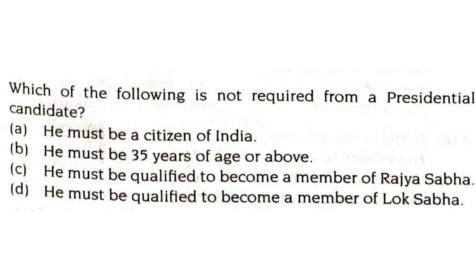Which of the following is not required from a presidential candidate? He must be a citizen of India — required. He must be 35 years of age or above — required. He must be qualified to become a member of Lok Sabha — required. He must be qualified to become a member of Rajya Sabha — this is not required. So option C is the correct answer.